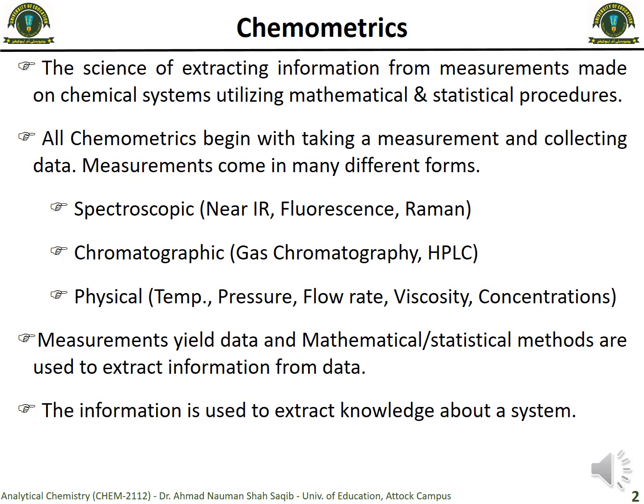We get different kinds of results from experiments, whether we are performing spectroscopy or whatever. We have raw data from any experiment, and to make it understandable we apply different functions - both mathematical and statistical - so that we can extract information from it. That branch of analytical chemistry is known as chemometrics, in which we use different mathematical and statistical tools to process the raw data and get useful information.